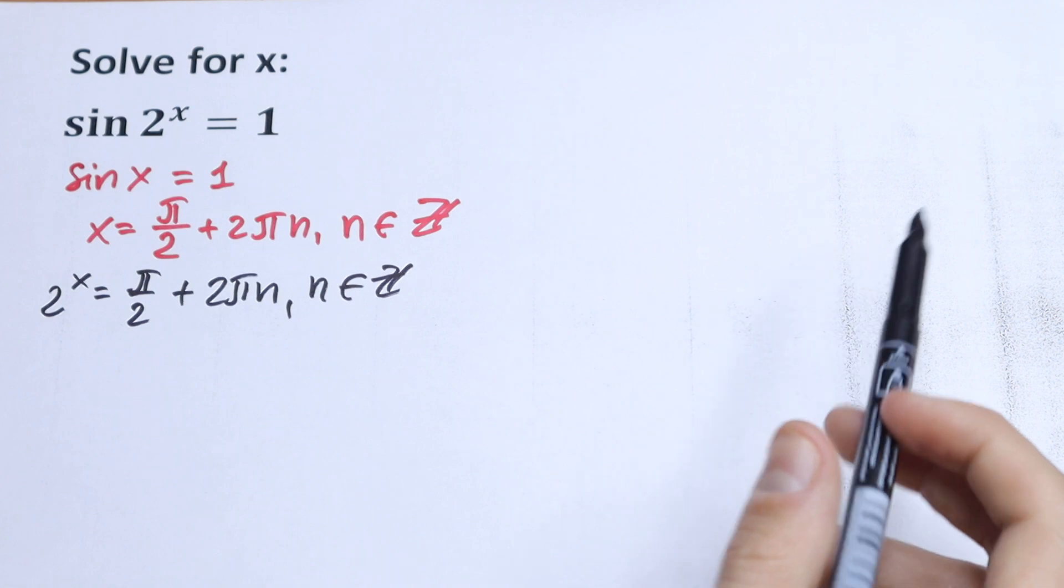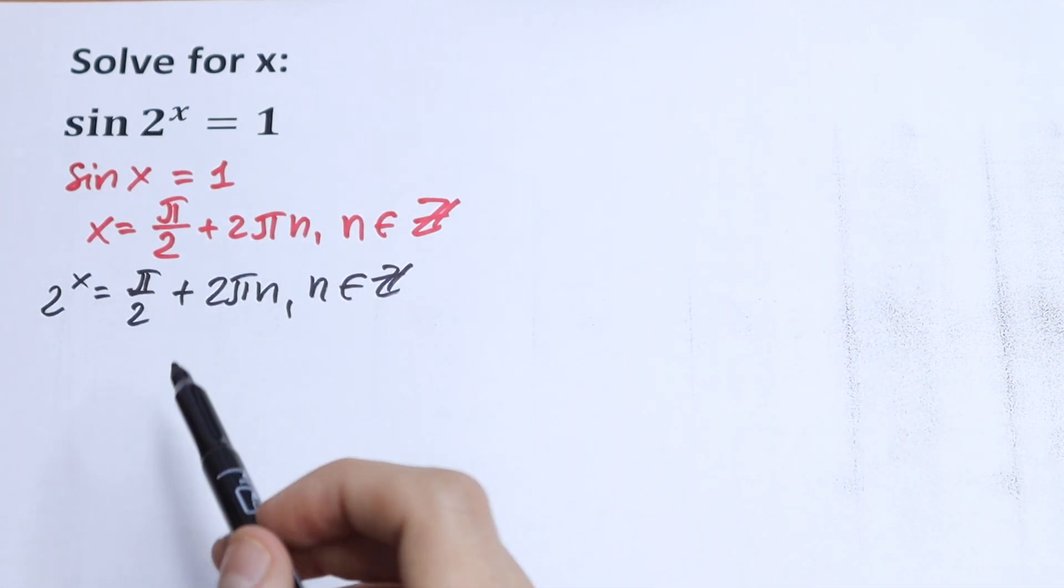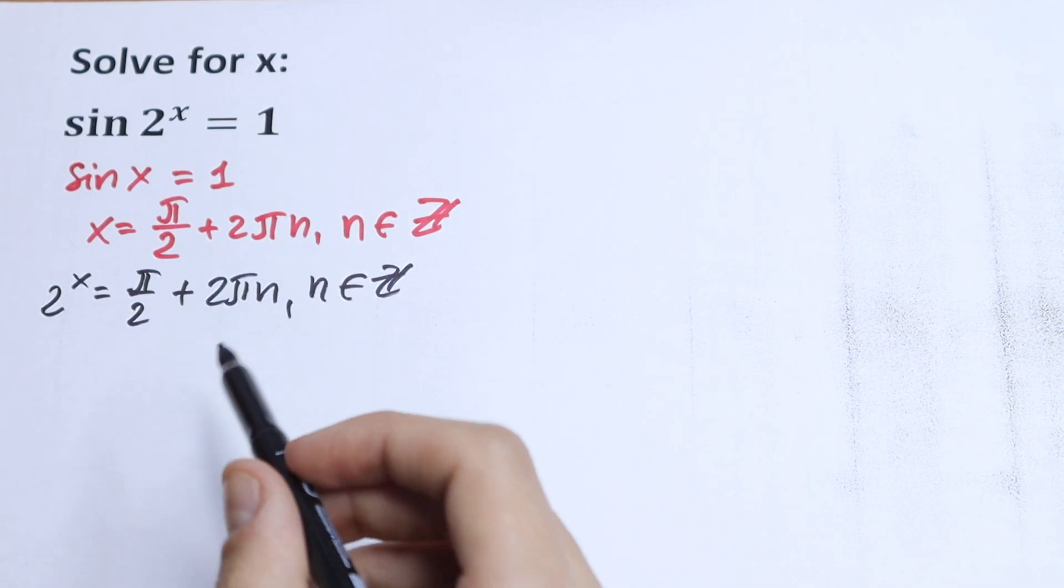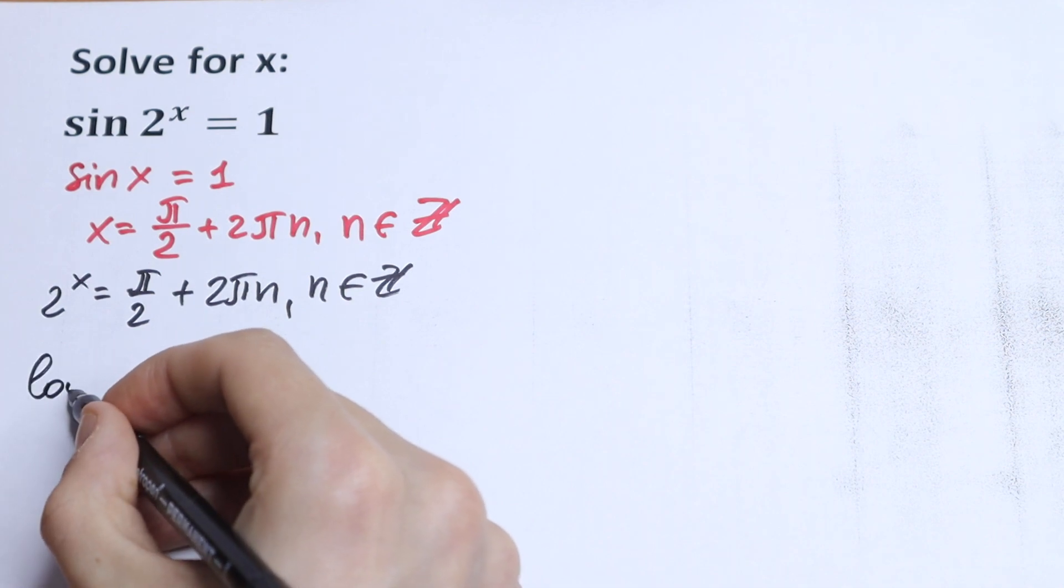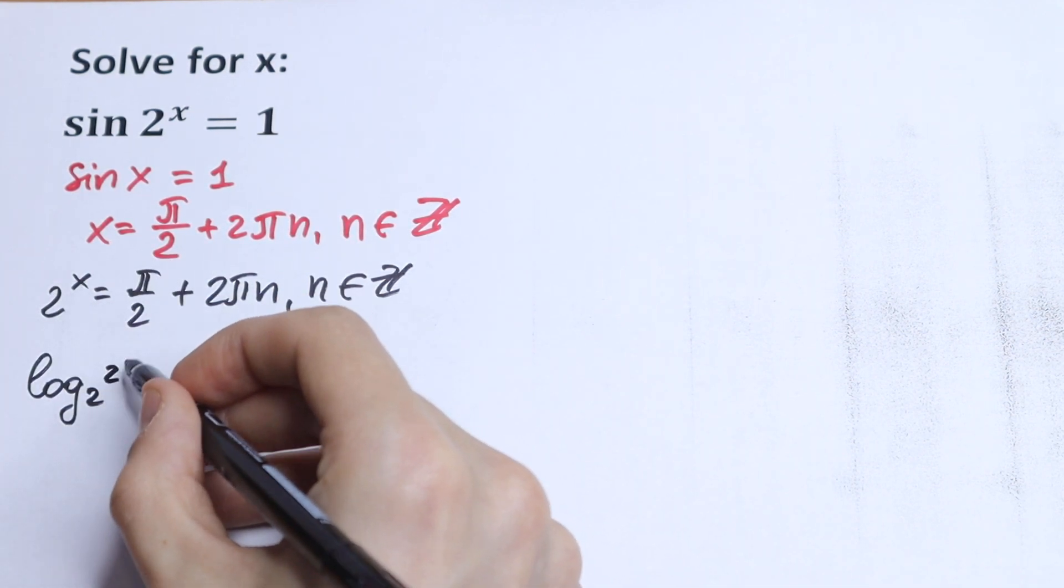So how can we do this? Of course, we have something like a logarithm right here. Let's take log base 2 from both sides. And as a result, we will have log base 2 from this 2^x.